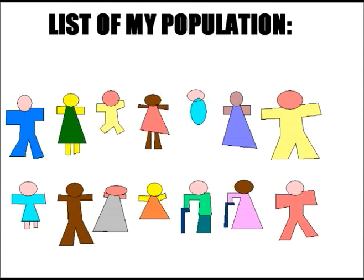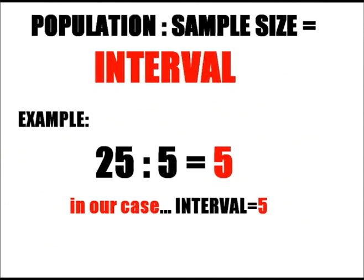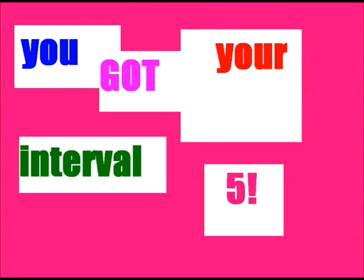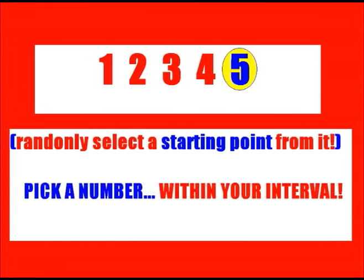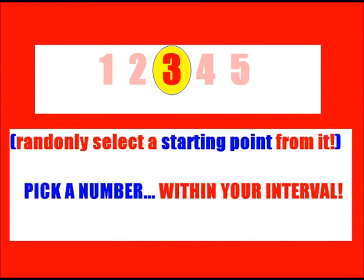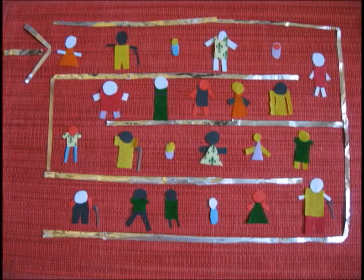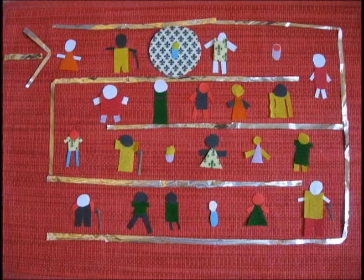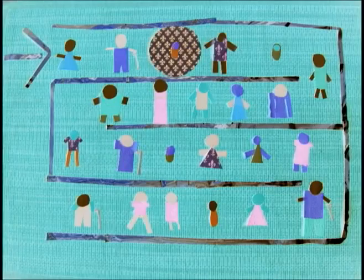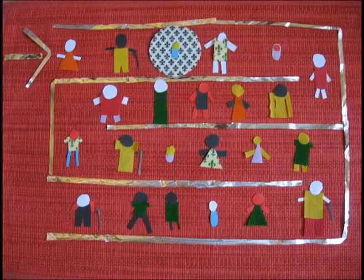Systematic! Make a list of all the subjects, give a number to all of them, divide the total number by the sample size you decide — you got your interval. Then randomly select a starting point. So choose that element in your list, then jump your constant interval each time. That's fine!